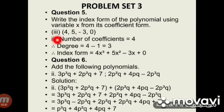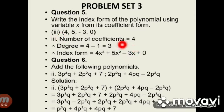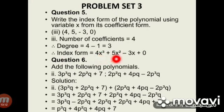Question 5: Write the index form of the polynomial using variable x from its coefficient form. Subdivision 3: The coefficient form is (4, 5, -3, 0). The number of coefficients is 4, therefore the degree equals 4 minus 1, equal to 3. Therefore the index form is 4x cubed plus 5x squared minus 3x plus 0.